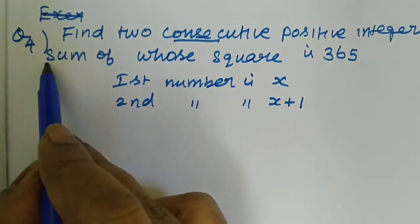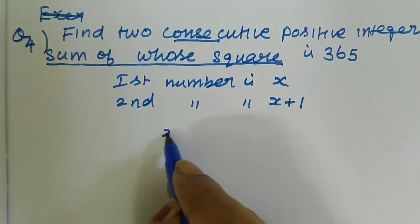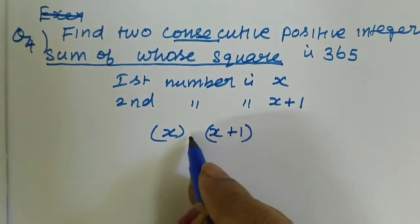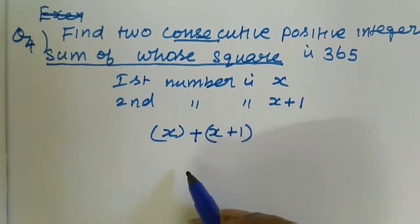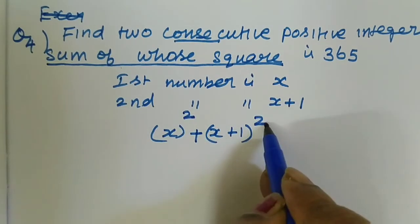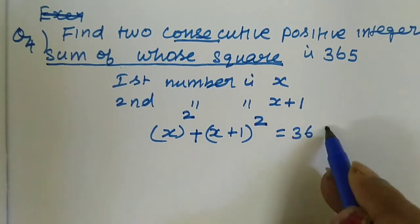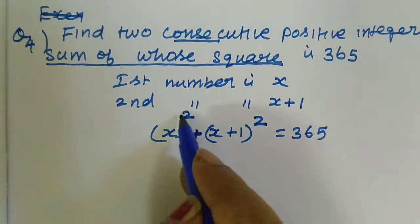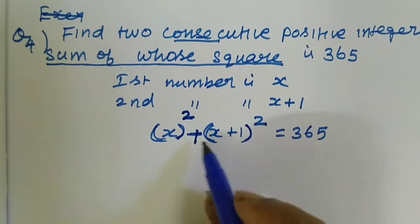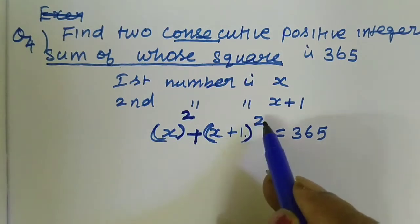Now, the sum of whose squares — that means the sum of these two values x and x plus 1. The sum of the squares of the integers is 365. So, the first integer squared plus the second integer squared equals 365.